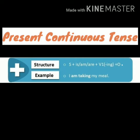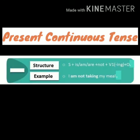The structure of present continuous tense for an affirmative sentence: Subject + helping verb (is/am/are) + verb first form with -ing + object. Example: 'I am taking my meal.'